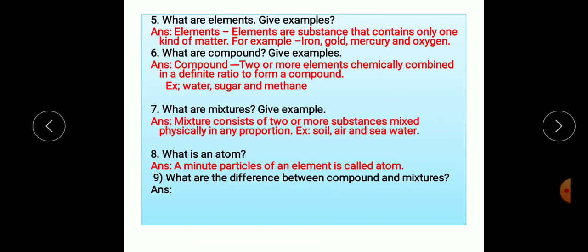Question number 5. What are elements? Give examples. Elements are substances that contain only one kind of matter. For example, iron, gold, mercury and oxygen.